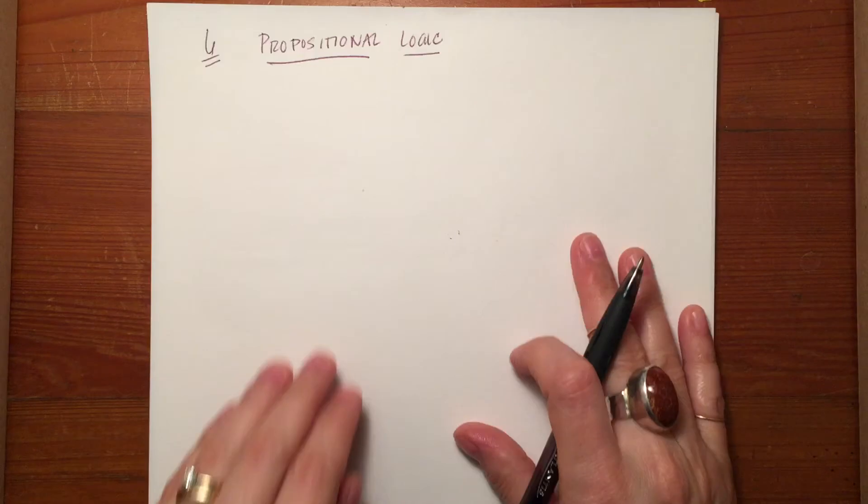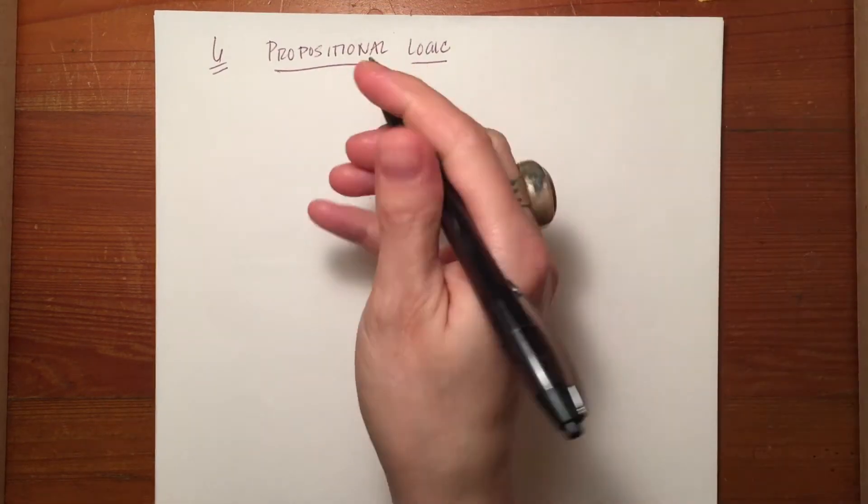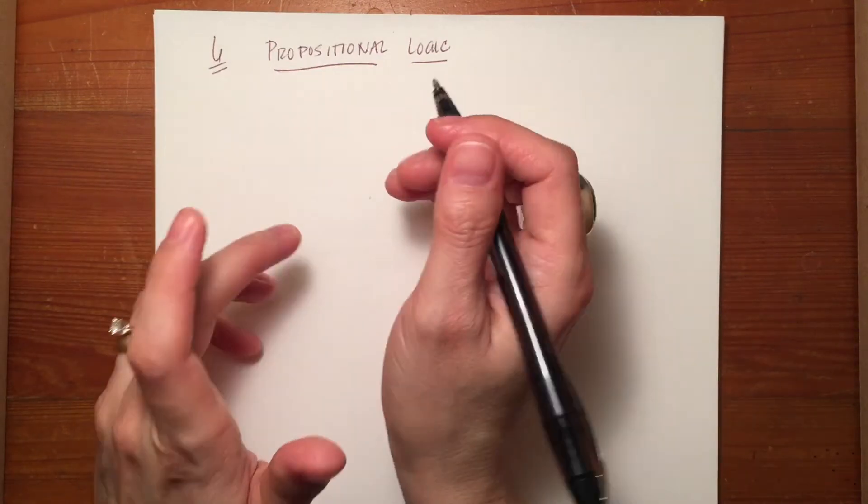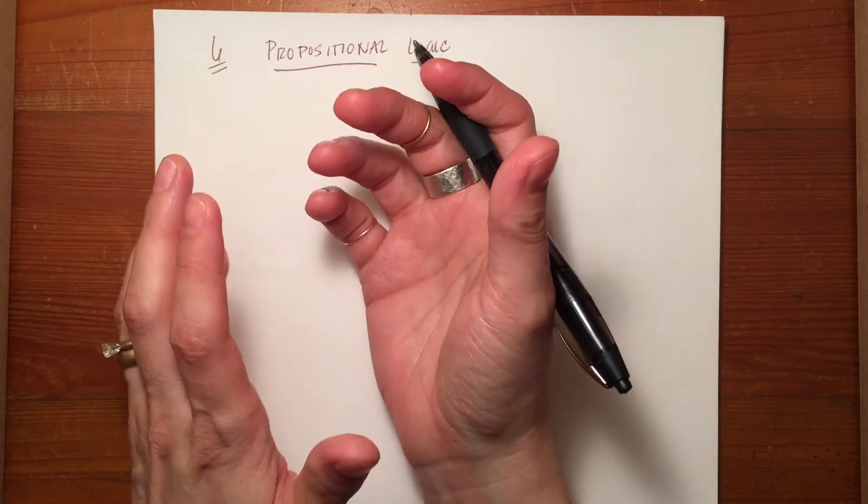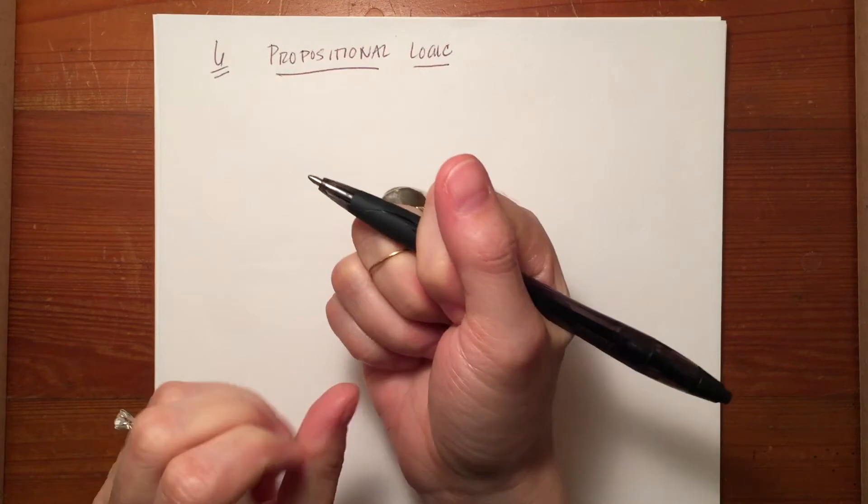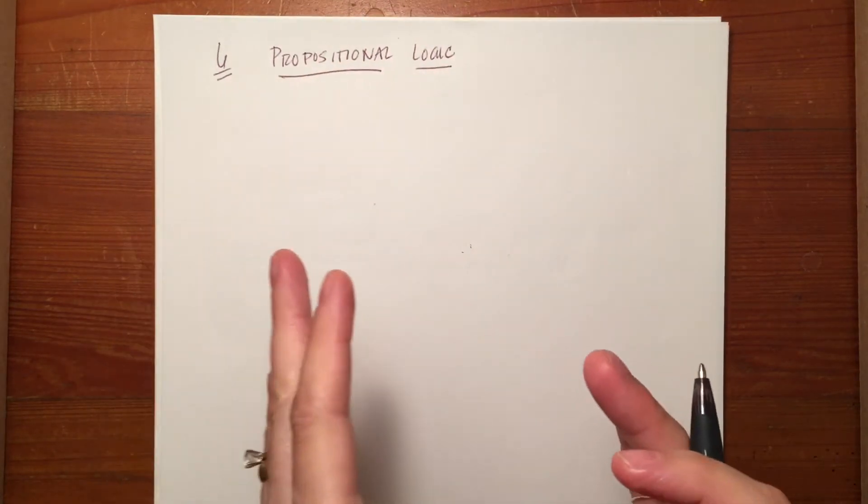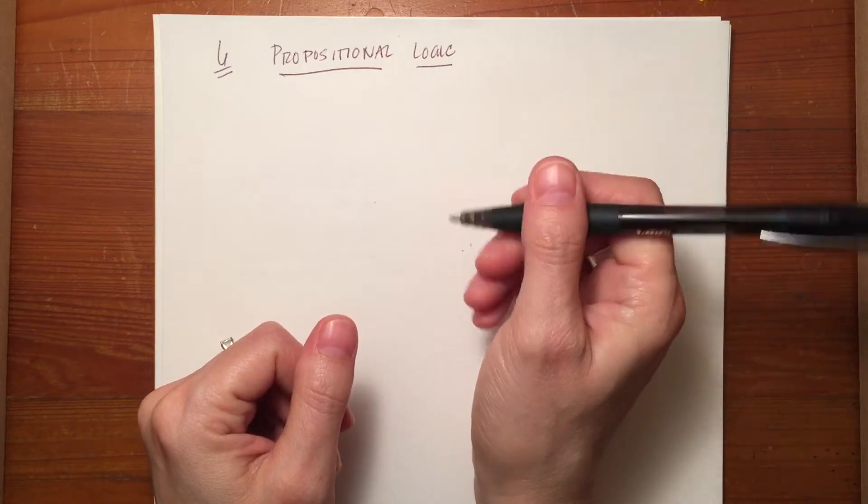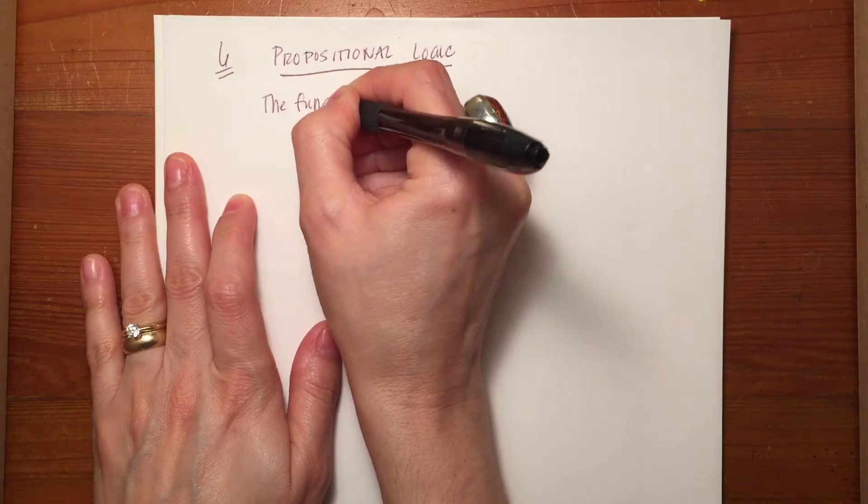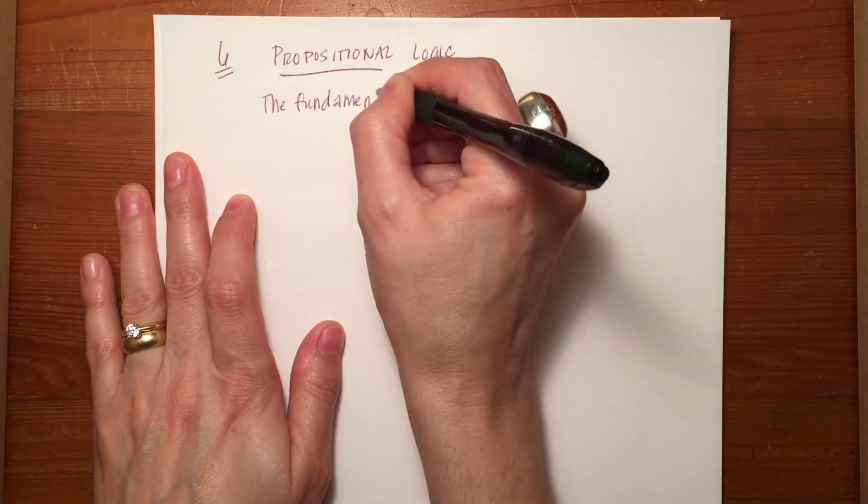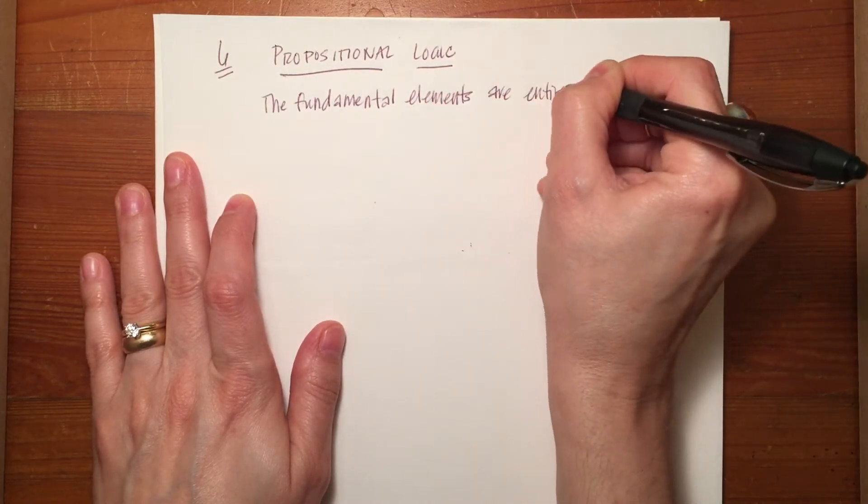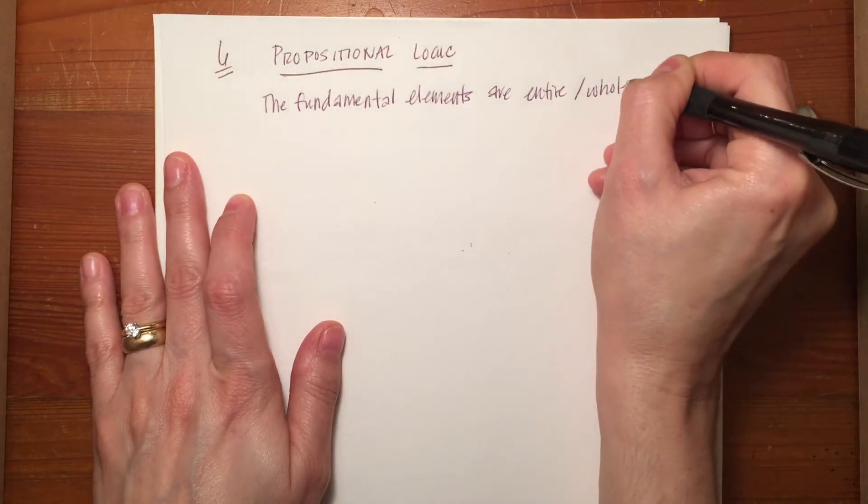The other thing that's very different about propositional logic than what we've been doing before is that with proofs and Venn diagrams and anything having to do with categorical propositions, the major units or the fundamental elements, as your book puts it, were terms. You had your subject term and your predicate term. So what you have in propositional logic is now the fundamental elements are entire or whole statements.